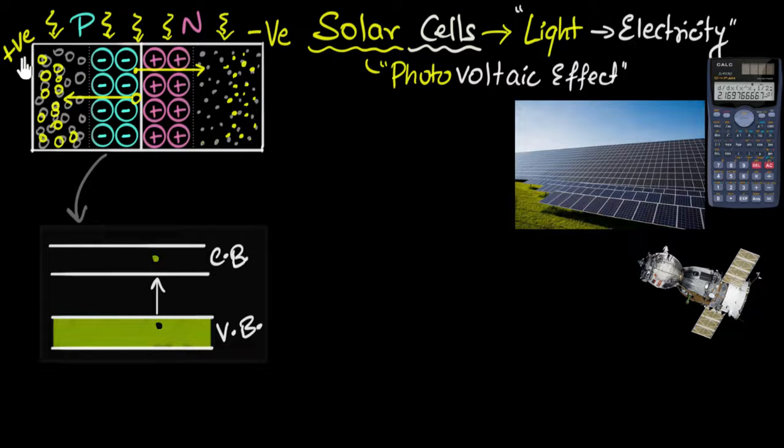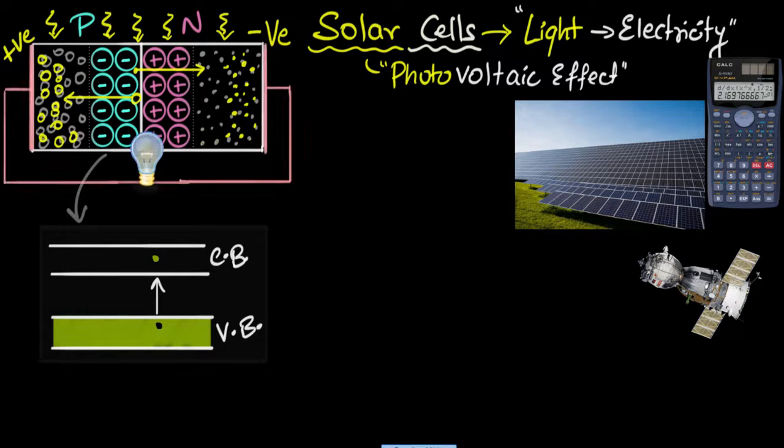And now, what would happen if I were to put metallic contacts over here and then connect a device across it, say a bulb? Well then, these electrons will all repel each other and immediately start flowing through this circuit, through the bulb, and will recombine with the holes.